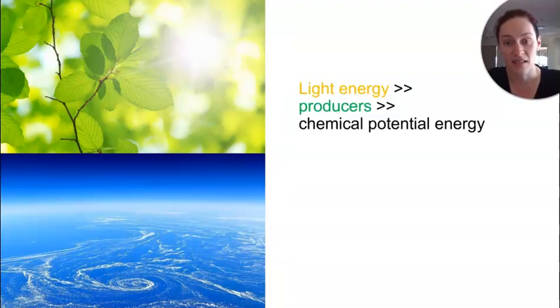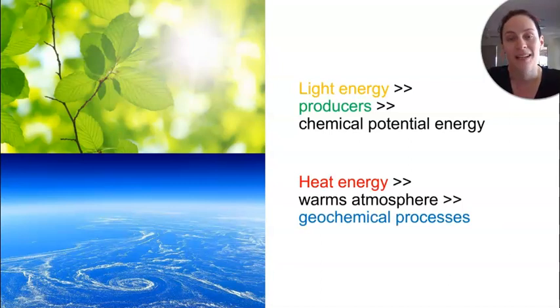So at its essence, light and heat energy are emitted by the sun, and light energy is captured by photosynthetic organisms like plants and algae and it's converted into chemical potential energy. The heat energy is going to warm the planet and therefore allow the geochemical processes of Earth to take place, like the tides, the ocean currents, and the weather systems.